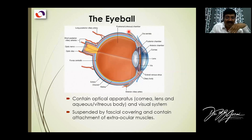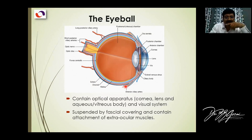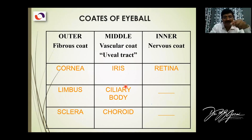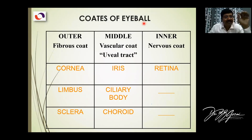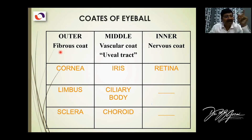Here you can see the extraocular muscles, which we'll discuss in the next class. At present we'll cover the eyeball. So it has three coverings. The outer covering is known as the fibrous coat, which is formed by the cornea and sclera. The junction of cornea and sclera is known as the limbus.